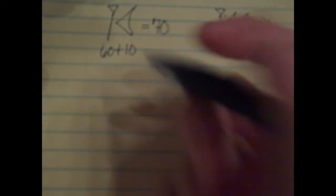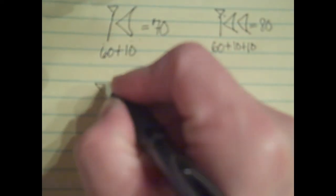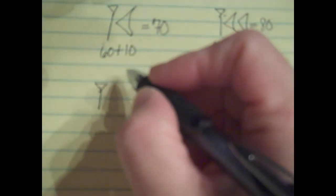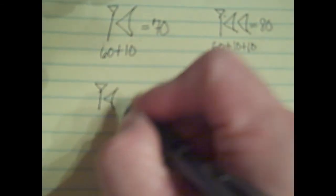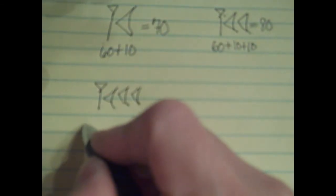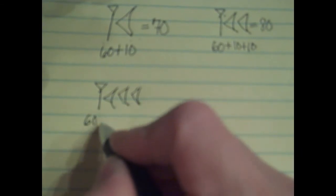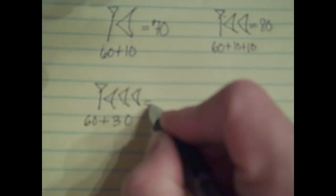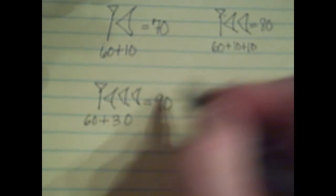And 90 is going to be the same. 90 would simply be the number 60, or the sign for 60, plus 3 of the wedges, the 10 wedges. And if we remember, the three wedges together equals 30. And you add them all up together, and you get 90.